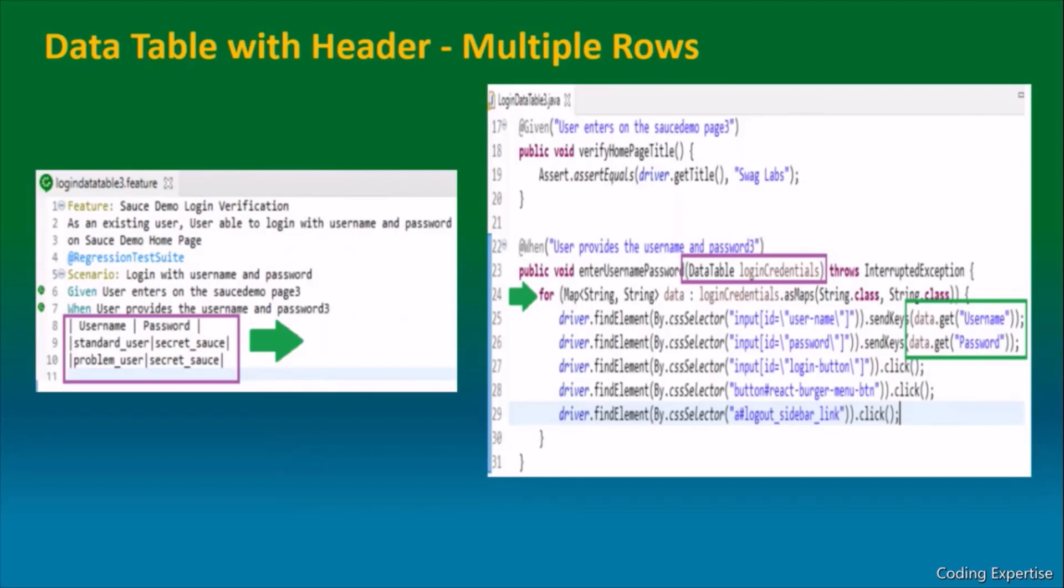Data table with header multiple rows. When I say multiple rows, iteration comes to your mind. Yeah, that is correct. We have username and password with multiple rows of data. Everything remains the same. Enter username password is a method, same data table combination. Here we are using for loop to iterate over the data. Map<String, String> data: loginCredential.asMaps(String.class, String.class). Since it is strings, username and password, that is why we prefer to use String.class and String.class. And here using data.get(username) we fetch the username value, data.get(password) fetches the password value. See how cool it is.